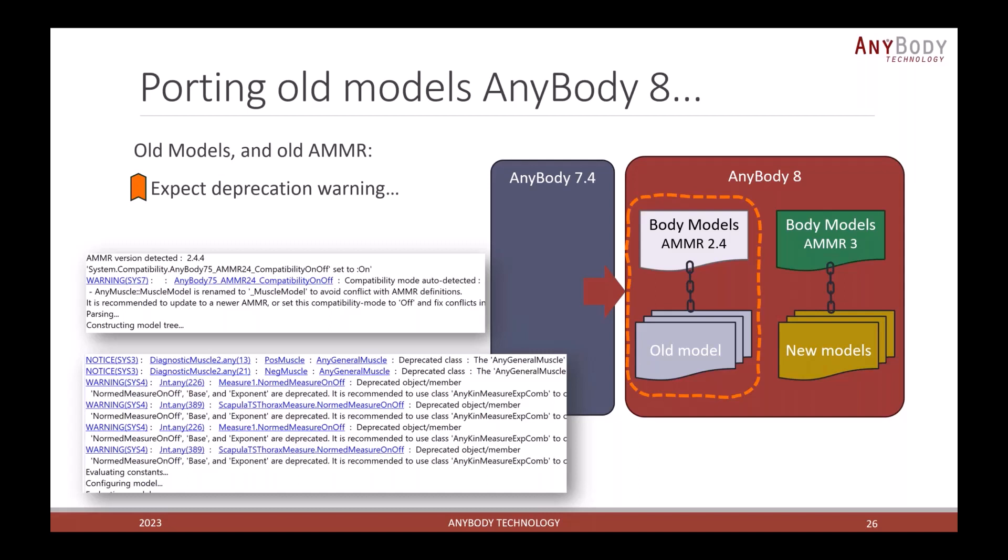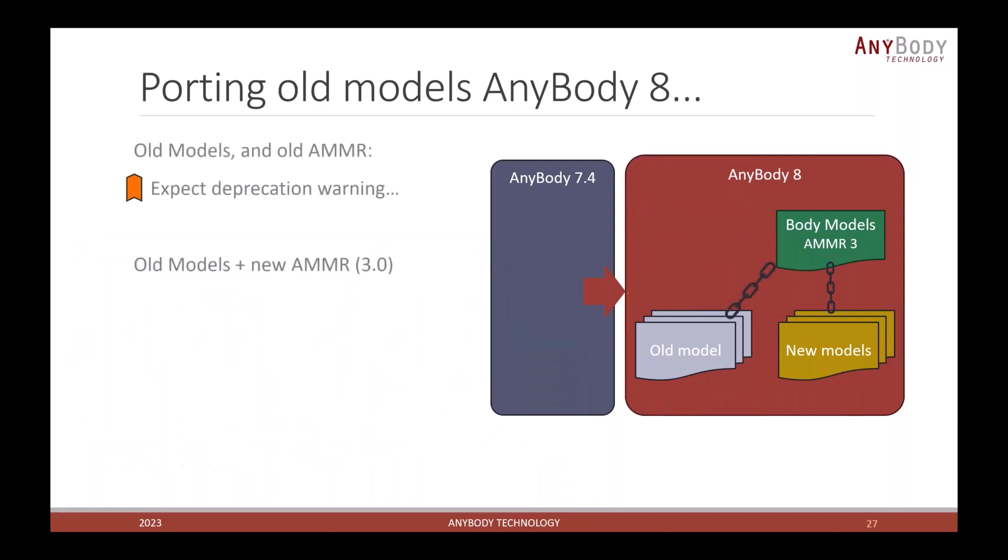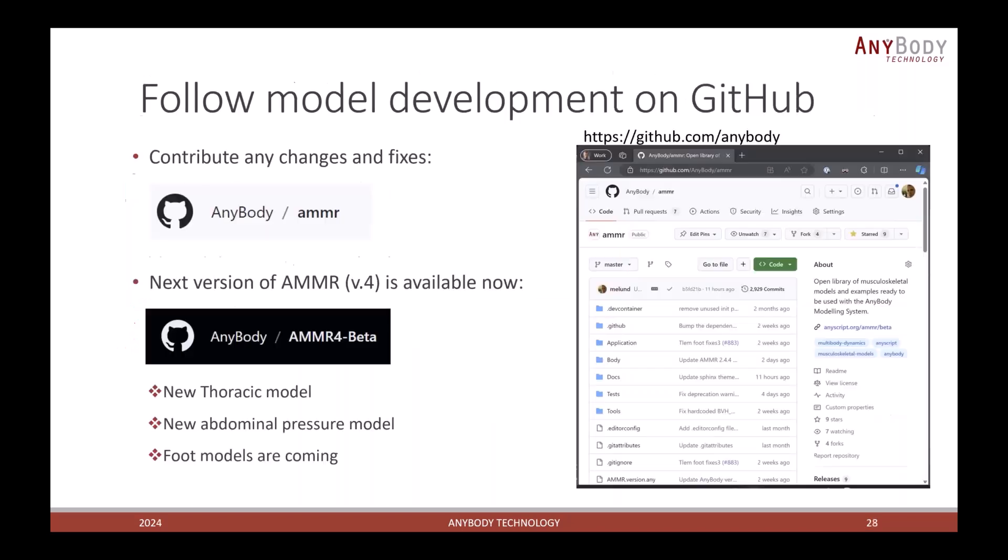But maybe a better version going forward would be to take your old model and then link it with a new body model repository. In many cases for simple models, that will just work okay. But if you have complex models that really change body models or hook into specific variables, then your models might actually need change. You might run into some errors that say I can't find this variable name or something like that. In that case, this guide for migrating your models is useful. It has a lot of error messages that you might encounter and then descriptions on how to fix them.